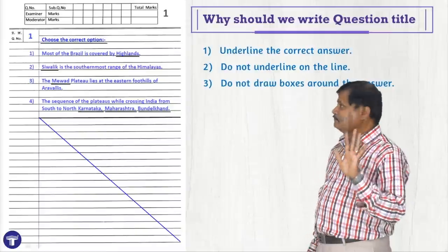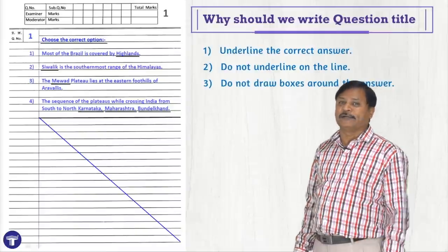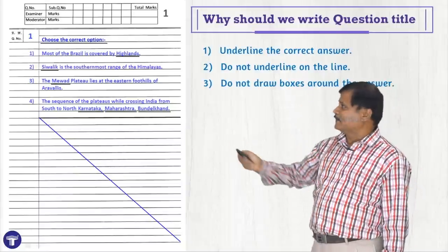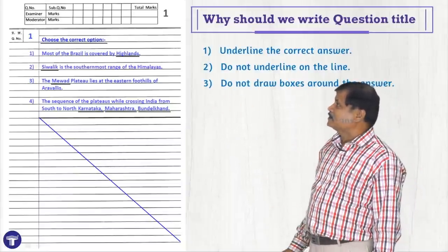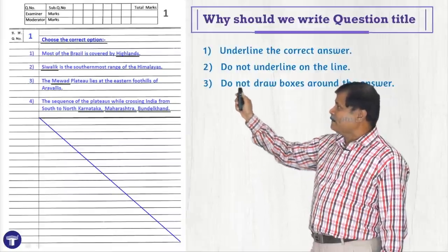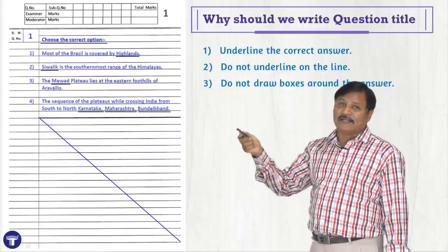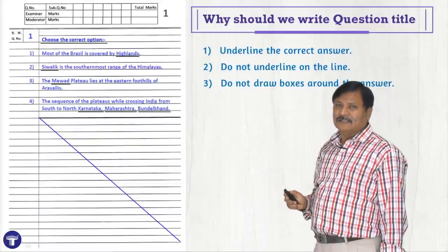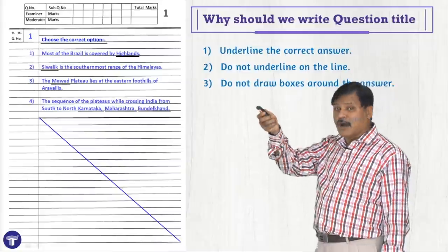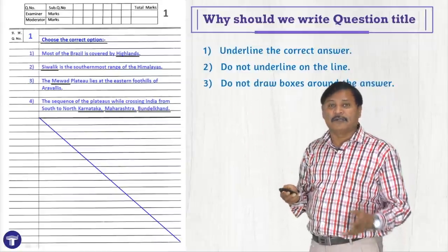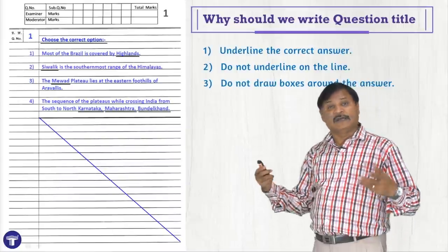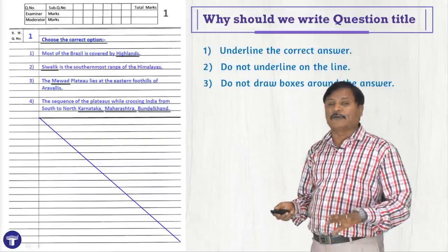When writing fill in the blanks, there are common mistakes. First is underlining the wrong place — for example, the question is 'most of Brazil is covered by ___', you write 'most of Brazil is covered by highlands' but underline 'Brazil' instead of 'highlands' — that irritates the checker. Second is underlining on the line itself, so the answer is not visible. Third is not underlining at all. That is another problem.